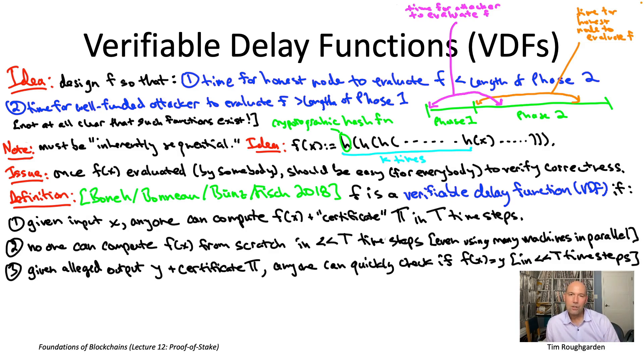So if somebody does go through the trouble of evaluating f and generating the corresponding certificate pi that we talked about in property one, well then given the alleged output and the supporting certificate pi, anybody, including honest nodes, can verify correctness really quickly, meaning much, much, much faster than capital T time steps.